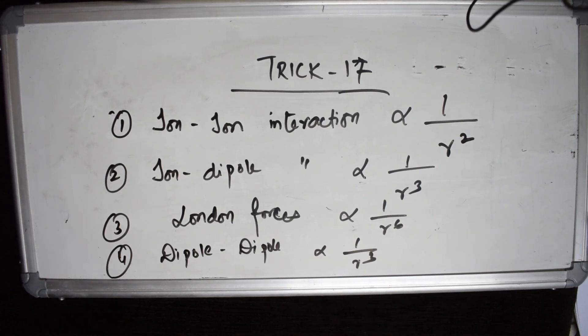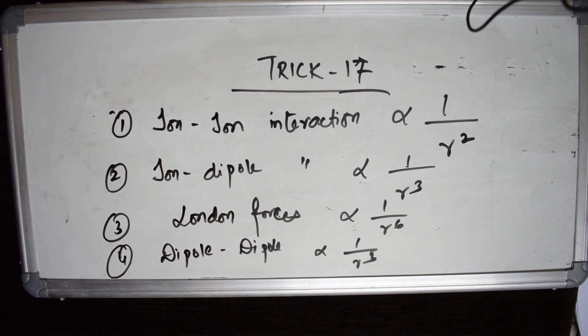London dispersion forces and dipole-dipole interactions are also inversely proportional to the cube of the radius. These formulas can be directly applied in the exam when numerical questions are given. Now let's move to trick number 18.